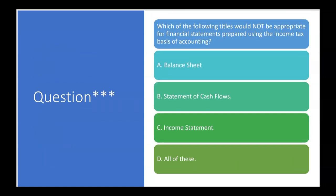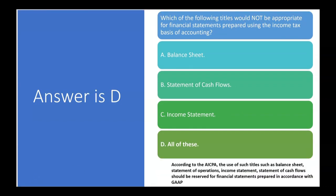Which of the following titles would not be appropriate for financial statements prepared using the income tax basis of accounting? Since the income tax basis is a special purpose framework, you wouldn't want to use balance sheet, statement of cash flows, or income statement in the title. The answer is D — all of these would not be appropriate, because according to the AICPA, titles like balance sheet, statement of operations, income statement, and statement of cash flows should be reserved for financial statements prepared in accordance with GAAP.